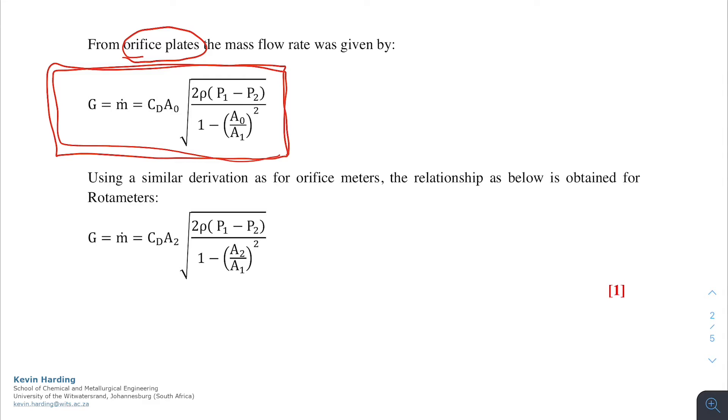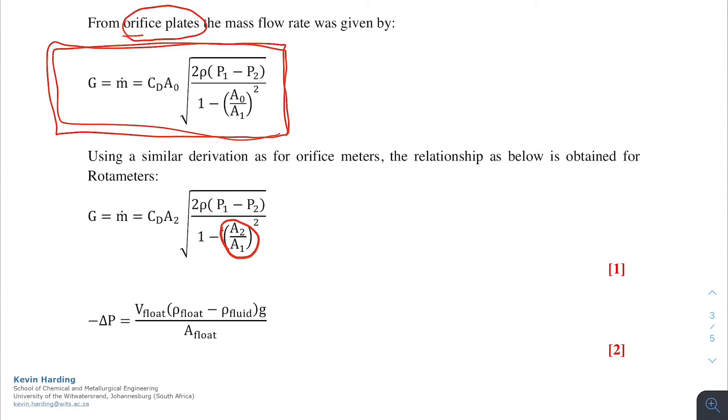Using this equation and substituting the values for A2 and A1 for the area as we have in the rotameter, we are left with equation 1. We can then replace P1 minus P2 with delta P1, which we define as the volume of the float multiplied by the density difference of the float in the fluid, multiplied by g, divided by the area of the float.